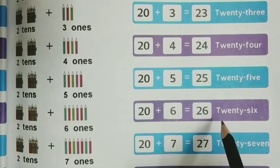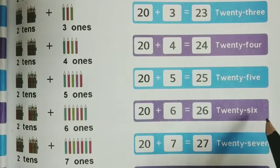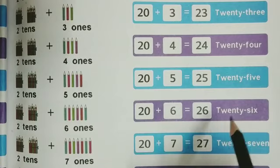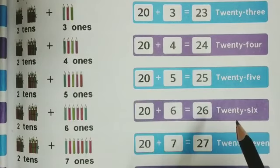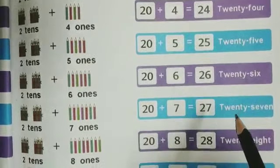The spelling of 26 is T-W-E-N-T-Y (20) S-I-X (6): twenty-six. We will move further.